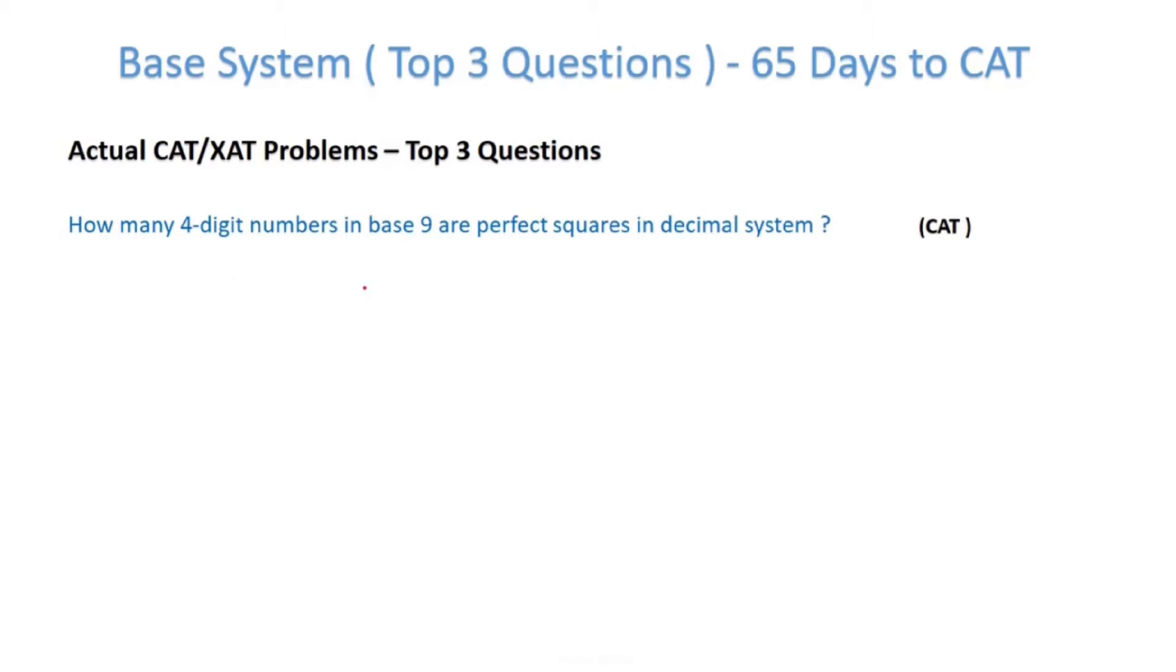Let's begin with the first one. How many four-digit numbers in base 9 are perfect squares in decimal system? So a four-digit number: the first is 1000, and the last four-digit number in base 9 is 8888. Remember, in base 9 you have digits from 0 to 8.